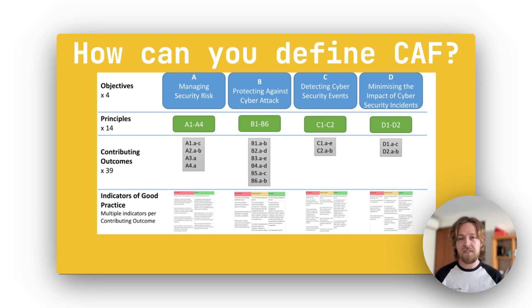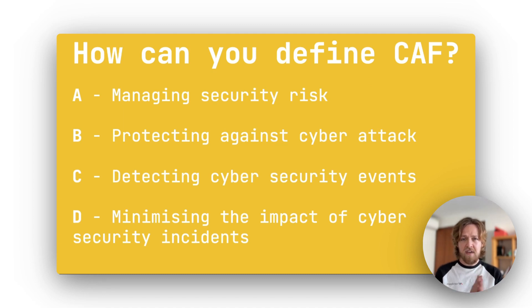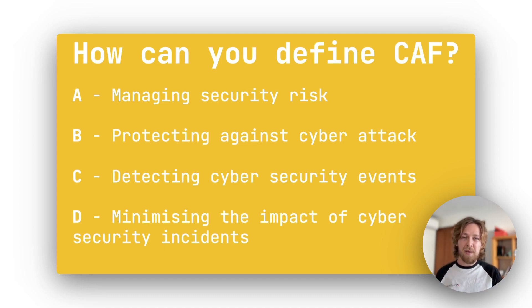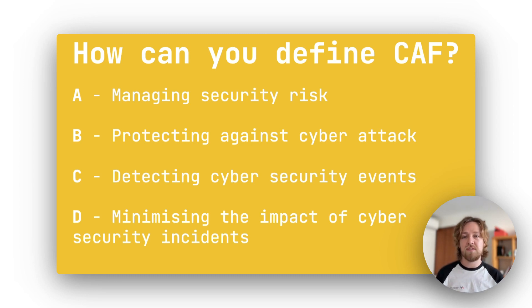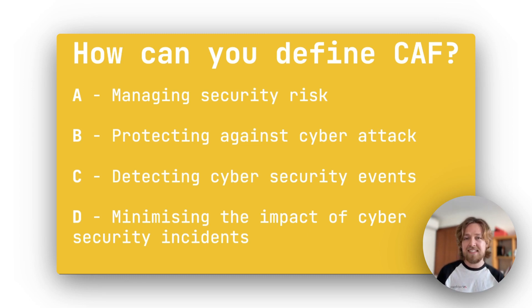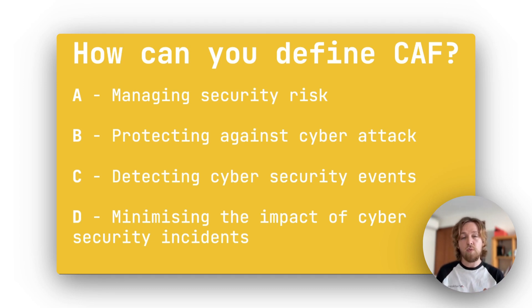Going over the main objectives: Objective A involves identifying and reducing cyber risk down to an acceptable level, focusing on being proactive rather than reactive. Objective B is for protecting against attacks, covering all the different solutions and processes used to protect systems and data. Objective C is about detecting cybersecurity events, going into more detail about how organisations can successfully identify unusual or malicious behavior within your system.